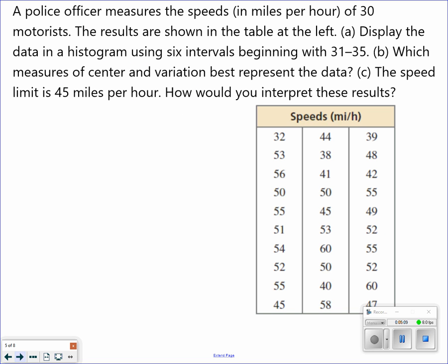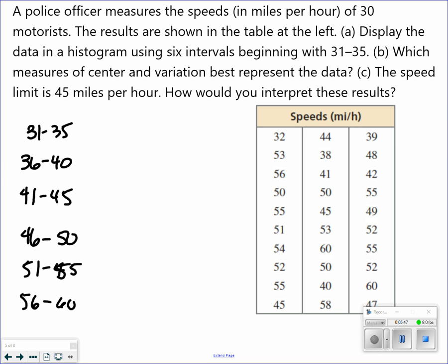The police officer measures the speeds in miles per hour of 30 motorists. The results are shown in the table. Display the data in a histogram using six intervals beginning from 31 to 35. So now, I have to basically come up with the rest of the intervals. So then, each time, it should have a difference of four. So the next interval is 36 to 40. Notice it still has a difference of four. 41 to 45, 46 to 50, 51 to 55, and 56 to 60. So now, I've broken this up into six intervals.